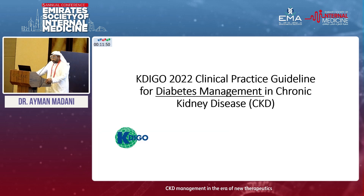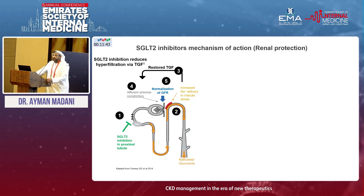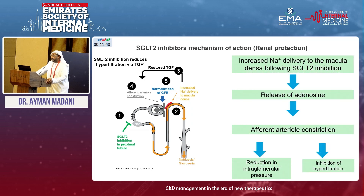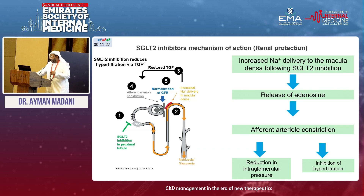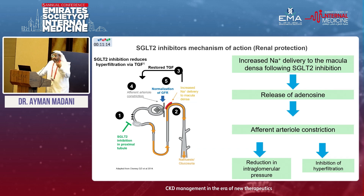Now the meaty part: diabetes management. SGLT2 inhibitors are the new kid on the block. What I want to highlight is that sodium delivery increases to the macula densa — a specialized group of cells in the distal convoluted tubule — which senses high sodium and releases adenosine, causing afferent arteriolar constriction. This reduces blood flow into the glomerulus, resulting in lower filtration and a drop in eGFR. That is the desirable effect: reducing intraglomerular blood pressure, which slows damage and prevents patients from reaching dialysis sooner.